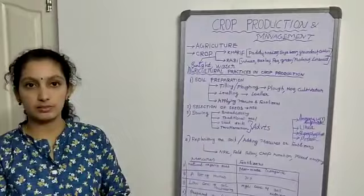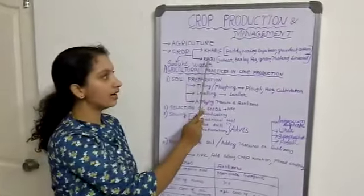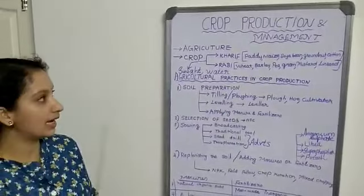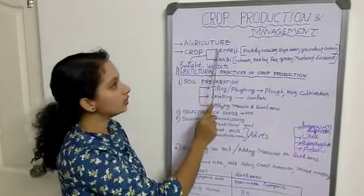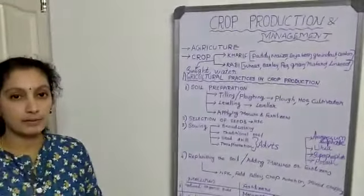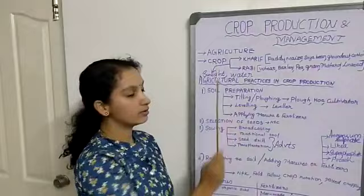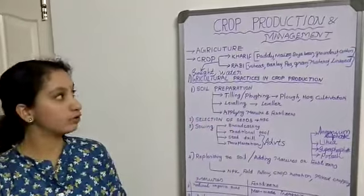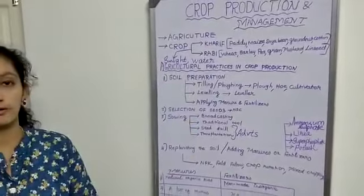Based on the availability of water and sunlight, we divide the types of crops into kharif and rabi crops. One type requires more sunlight and less water. Another type requires less sunlight and more water. So what are kharif crops? These kharif crops are grown in the rainy season, from June to September. Why? Because they require less sunlight and more water for growing.